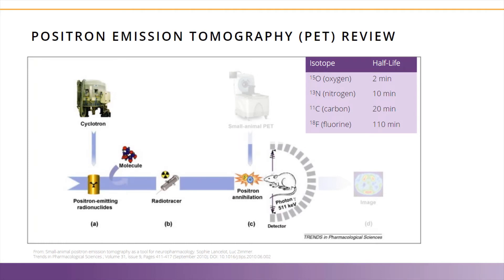Once the radio tracer is made in the cyclotron — and this must be a positron-emitting isotope — it is injected into the animal model for imaging. For example, FDG, the radioactive isotope of glucose, can be injected for detecting a tumor or a metastatic tumor model. A PET image alone will only show where the signal is present in three-dimensional space; however, without an anatomical reference, there is no way to know where the PET signal originates from. A quick anatomical CT scan following the PET acquisition can be co-registered to provide context for the PET signal.